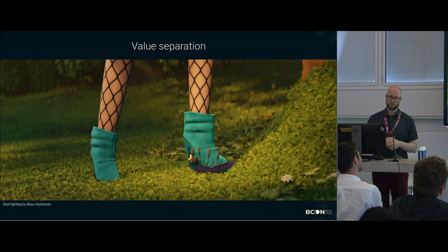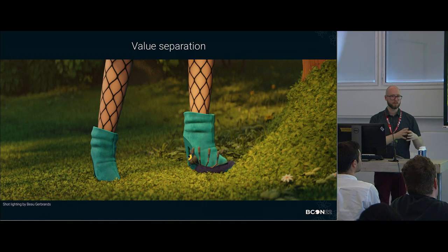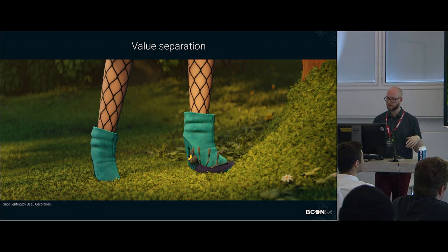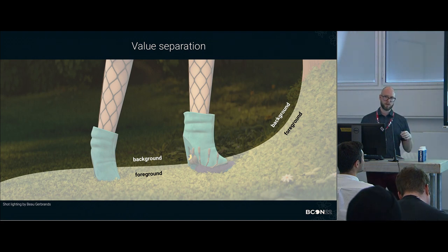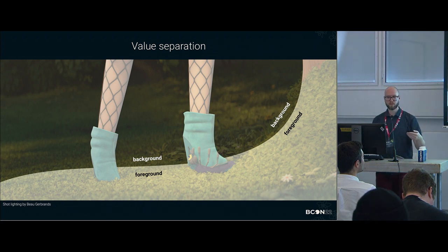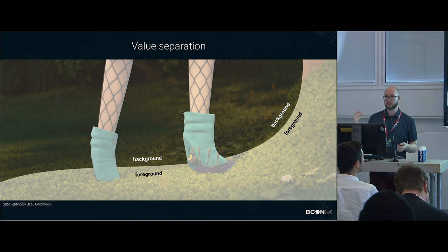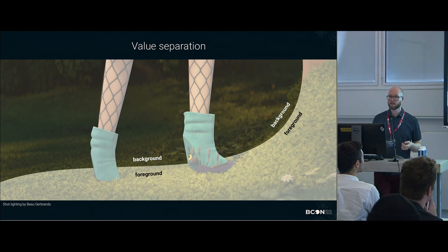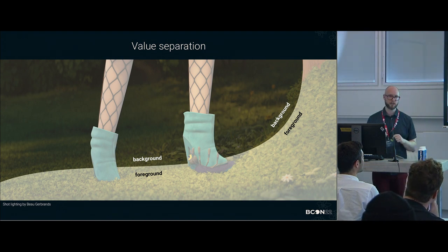Value separation was also very important because we had a very busy background — lots of leaves and lots going on. We tried to separate the characters by value as much as possible. In almost every shot, there's a clear separation between foreground and background by value. Values — when you desaturate your whole image, that's what you get. That's what your brain actually perceives when it first looks at a frame. Your brain just registers all the values first and then the colors. So we tried to make sure the action always happens in the areas of biggest contrast.